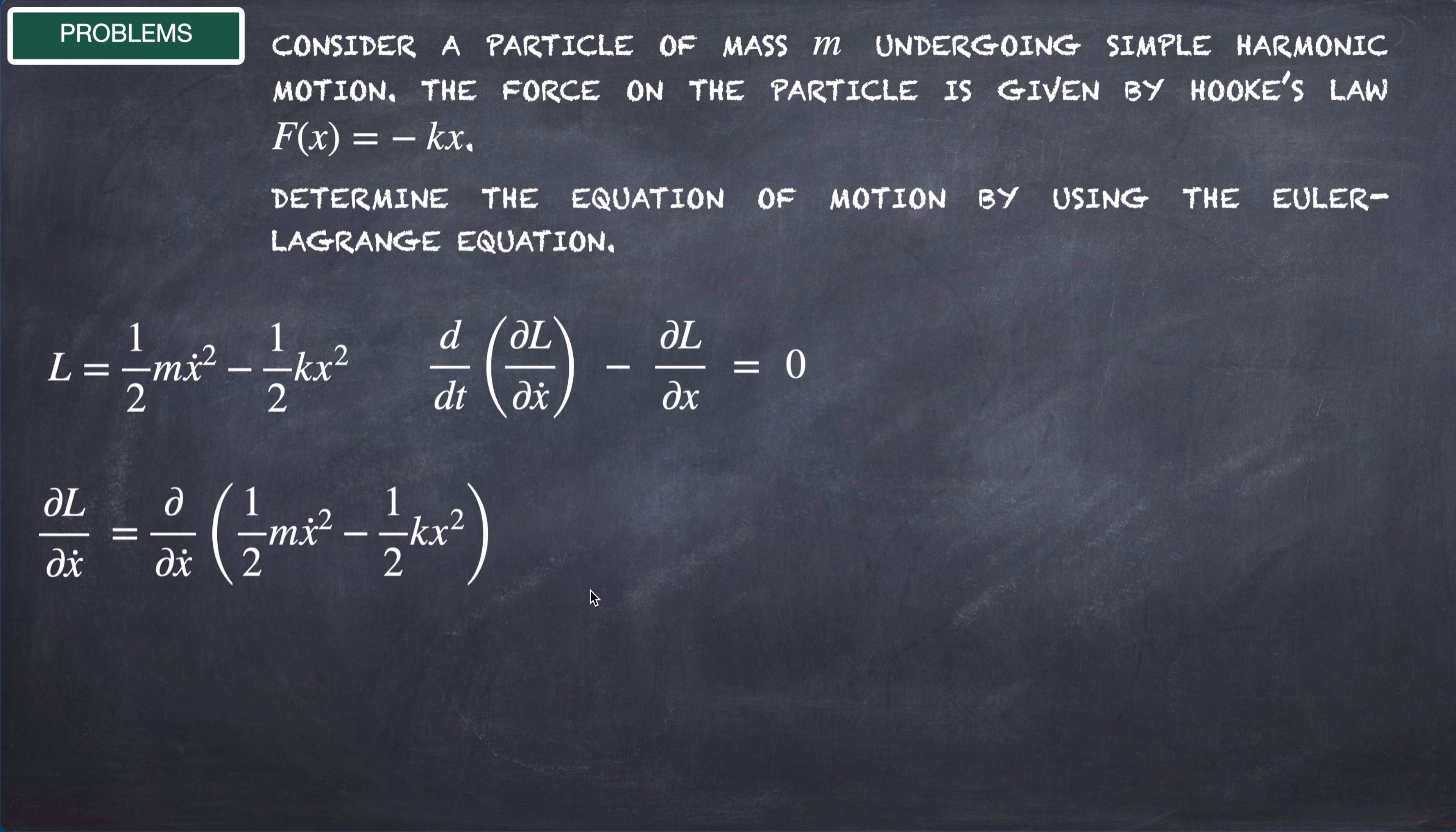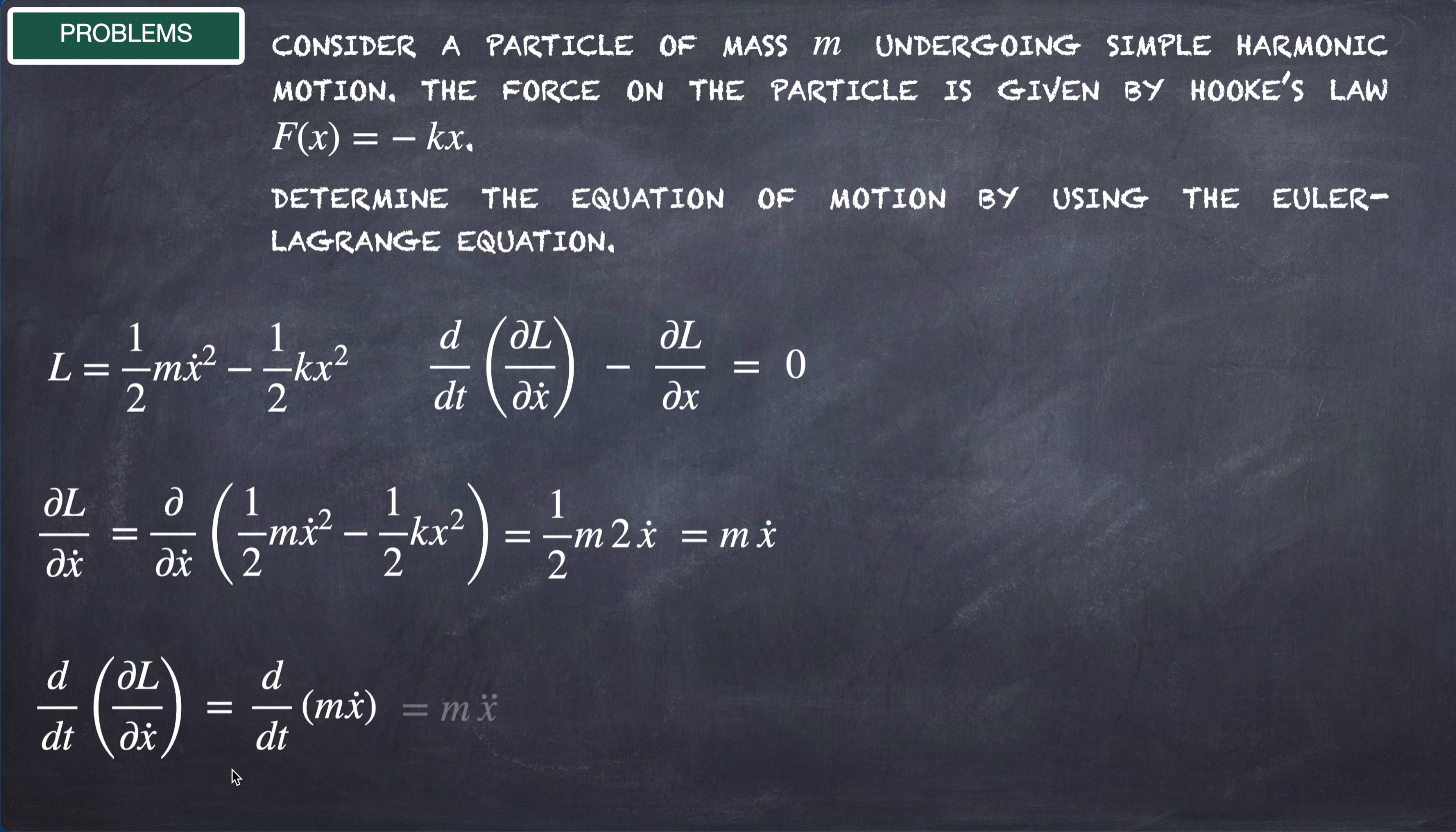The result is mẋ. The total time derivative of this result is mẍ. The partial derivative of the Lagrangian with respect to x is -½k(2x), in other words -kx.